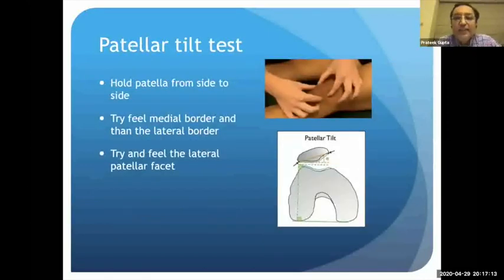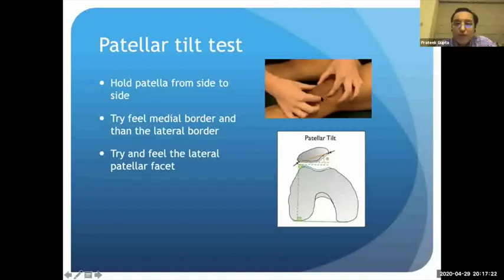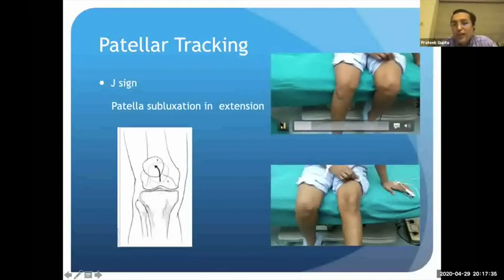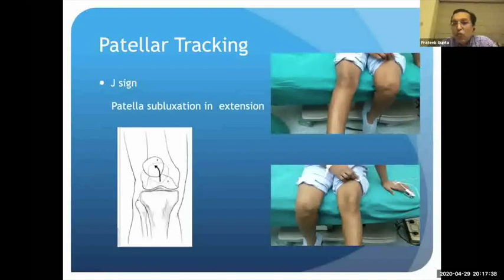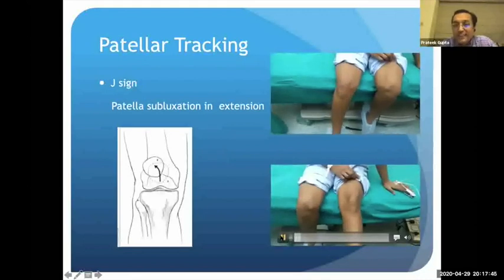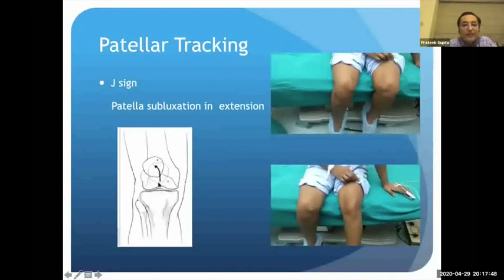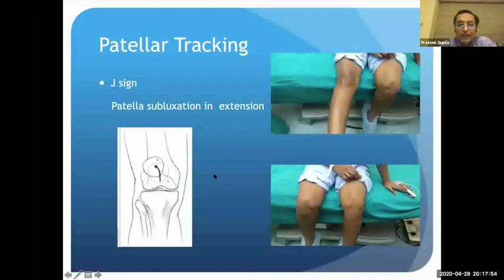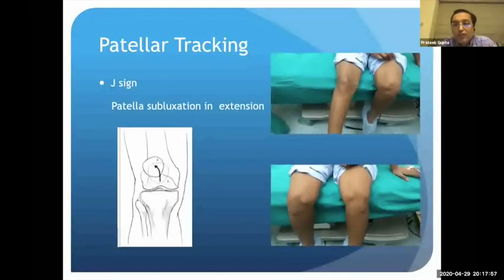Lateral structure tightness is assessed by patellar tilt — feeling for the lateral border of the patella; if unable to insinuate a finger under it, the lateral structures are tight. Patellar tracking is then observed from full extension to full flexion, noting when abnormal movement occurs — at 0 to 30 degrees, 30 to 60 degrees, or beyond 60 degrees. The J sign occurs in the last 30 degrees of extension when the patella suddenly moves outward in a J-shaped fashion.